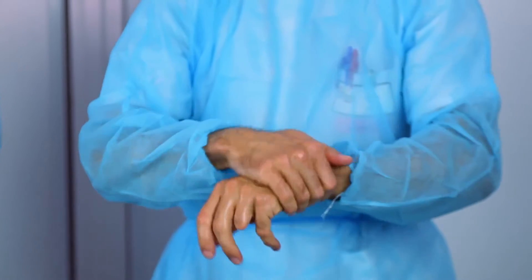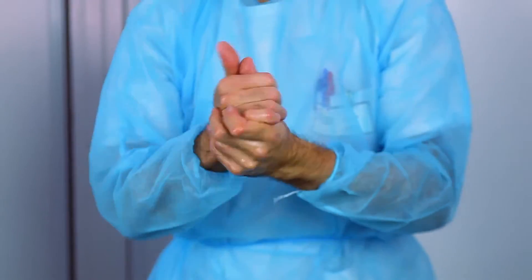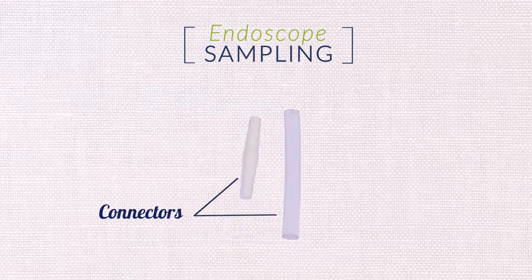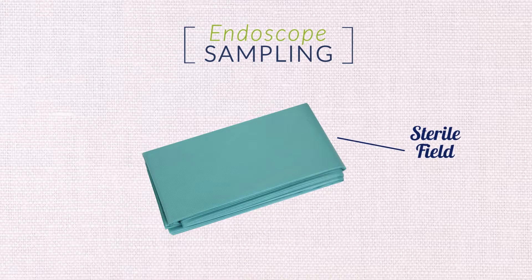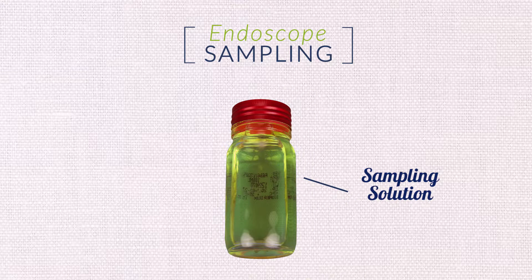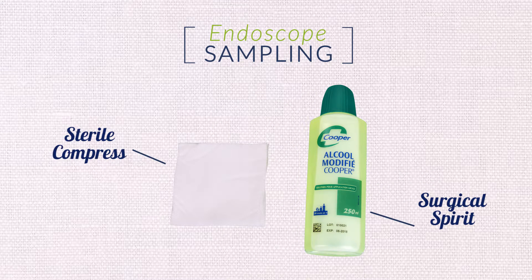For the endoscope sampling, the following materials are needed: one endoscope (in this case a gastroscope), syringes, connectors, one sterile field, one sampling bottle, one sampling solution, one sterile compress with surgical spirit, and one sampling sheet.